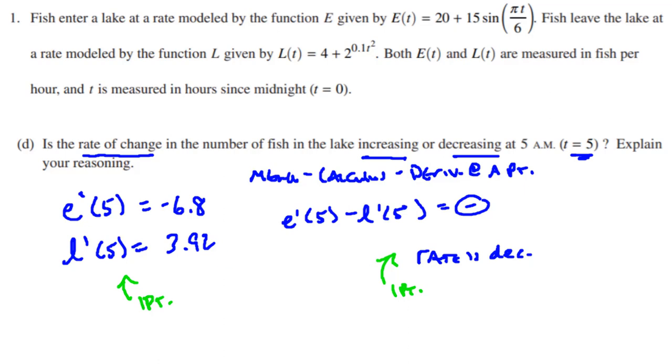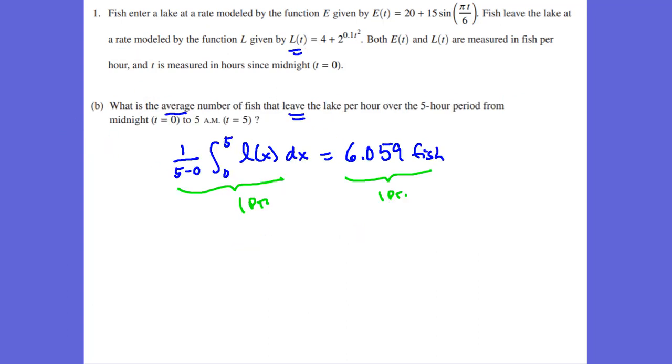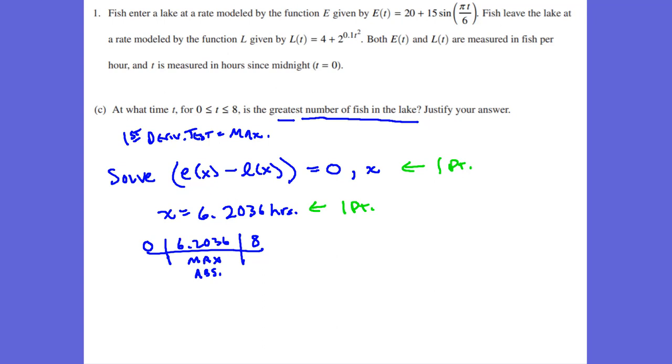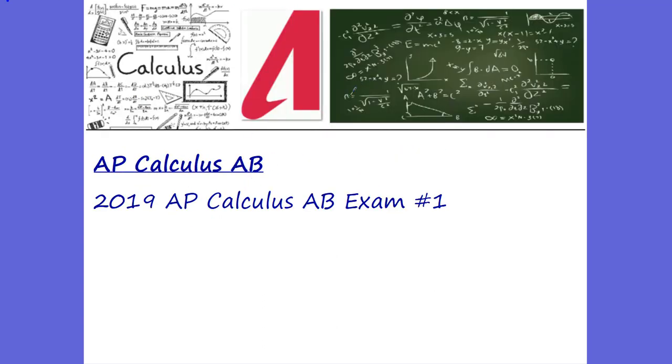So we're going to go an eight point problem for number one. You're going to just report in MrAyton.com your eight points. You get two points for A, two points for B, two points for C, and lastly two points for D. And that was the 2019 AP Calculus AB exam problem number one. Tune back in for problem number two tomorrow. See you guys. Bye.